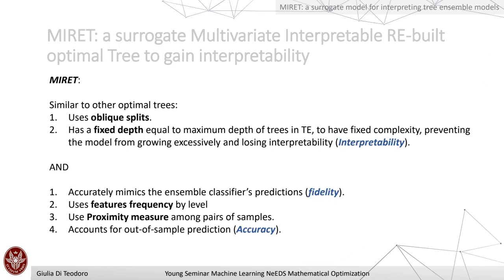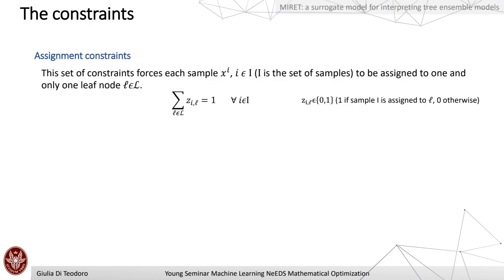MIRET takes the optimal tree formulation and, similar to optimal trees, uses oblique splits and has a fixed depth equal to the maximum depth of the trees in the forest we want to mimic — providing fixed complexity and preventing the model from growing excessively and losing interpretability. In addition to the basic optimal tree formulation, it accurately mimics the ensemble classifier's prediction (fidelity), uses feature frequency by level, proximity measures among pairs of samples, and accounts for out-of-sample prediction accuracy with respect to the ground truth.